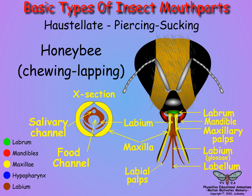Although this covers many of the haustellate species, other modifications are found in the thrips, fleas, and sucking lice. It should be noted that haustellate species with incomplete metamorphosis have immatures with haustellate mouthparts, but species with complete metamorphosis usually have immatures with chewing mouthparts and adults with haustellate mouthparts. For example, butterfly and mosquito larvae are mandibulate, but adults are haustellate.